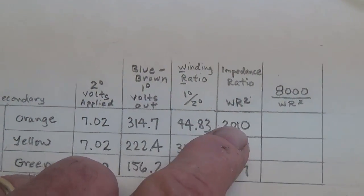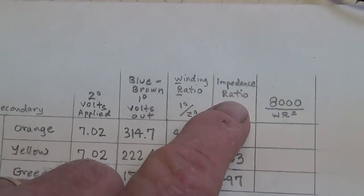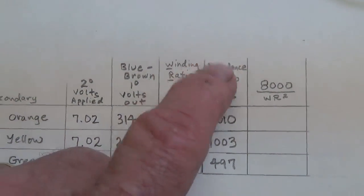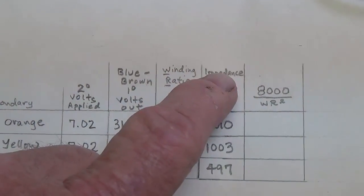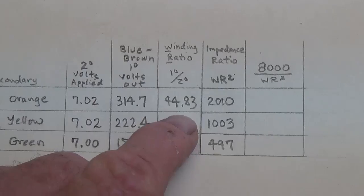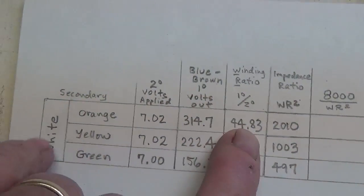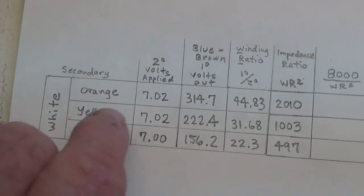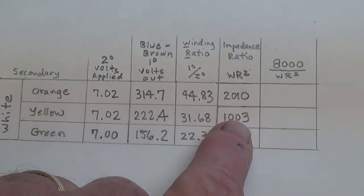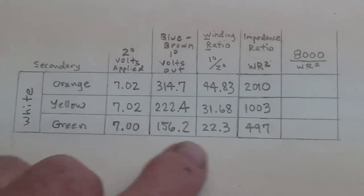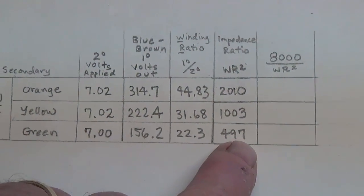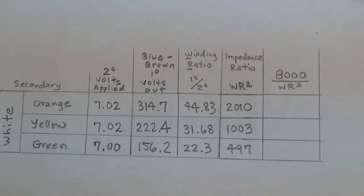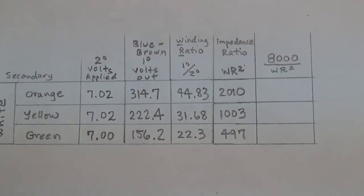The next step is we're going to enter this number and multiply it by itself. We're going to square it and write the result here. Now that we have squared the winding ratio, the winding ratio then between the white and orange wire was 44.83. We square it and we get something called the impedance ratio. Now this is the key to this whole presentation, the impedance ratio. And I wish they would list this on transformers. When we square the winding ratio between the white and orange wires, we'll get around 2,000. When we square the winding ratio between the white and yellow wires, we get around 1,000. And when we square the white to green wire ratio, we'll get around 500.